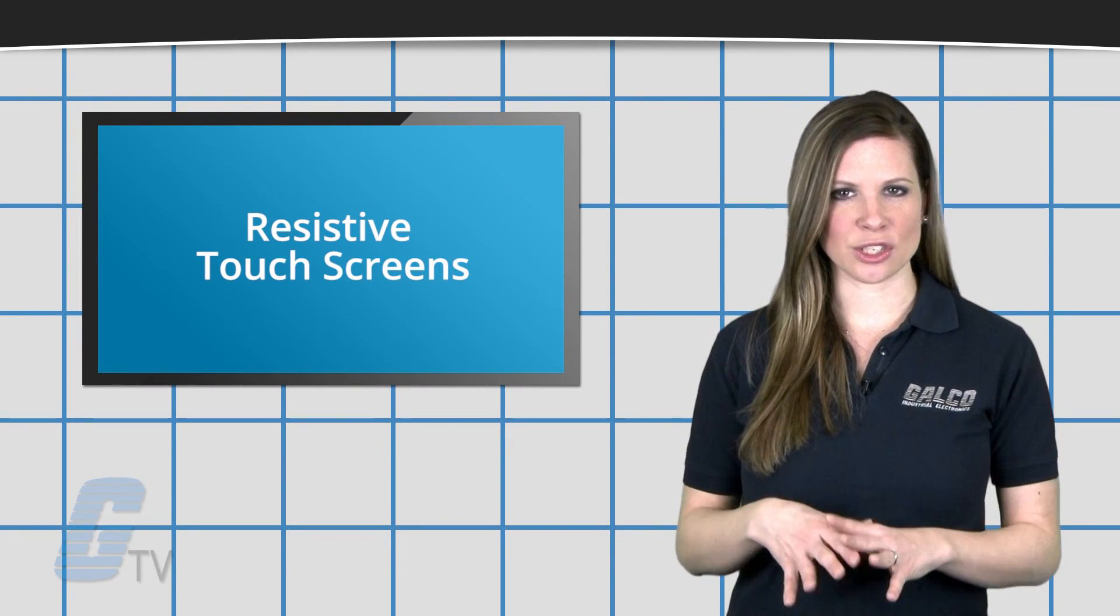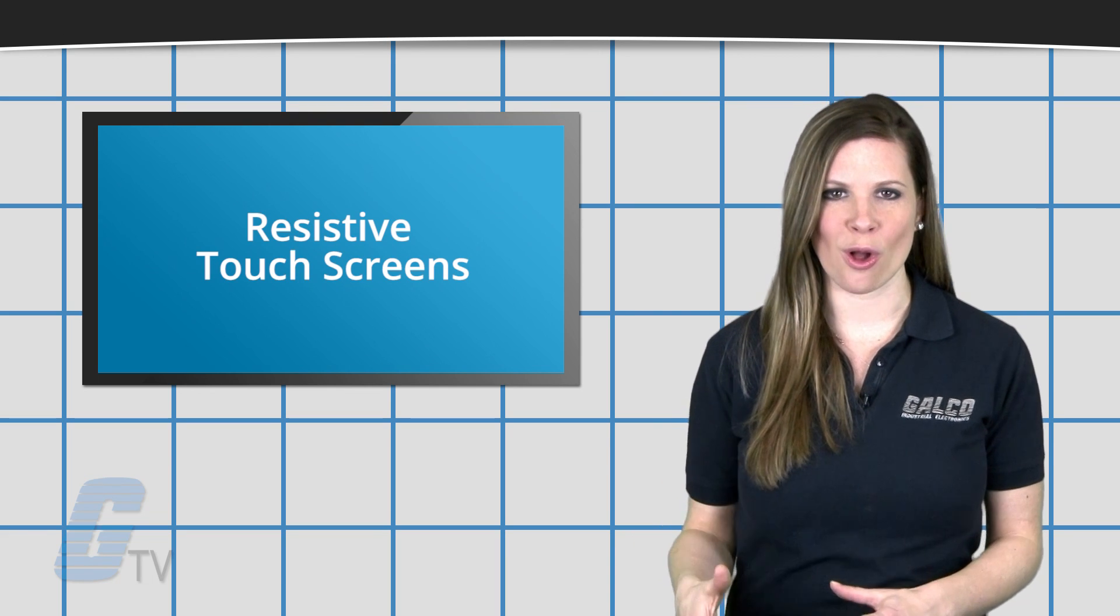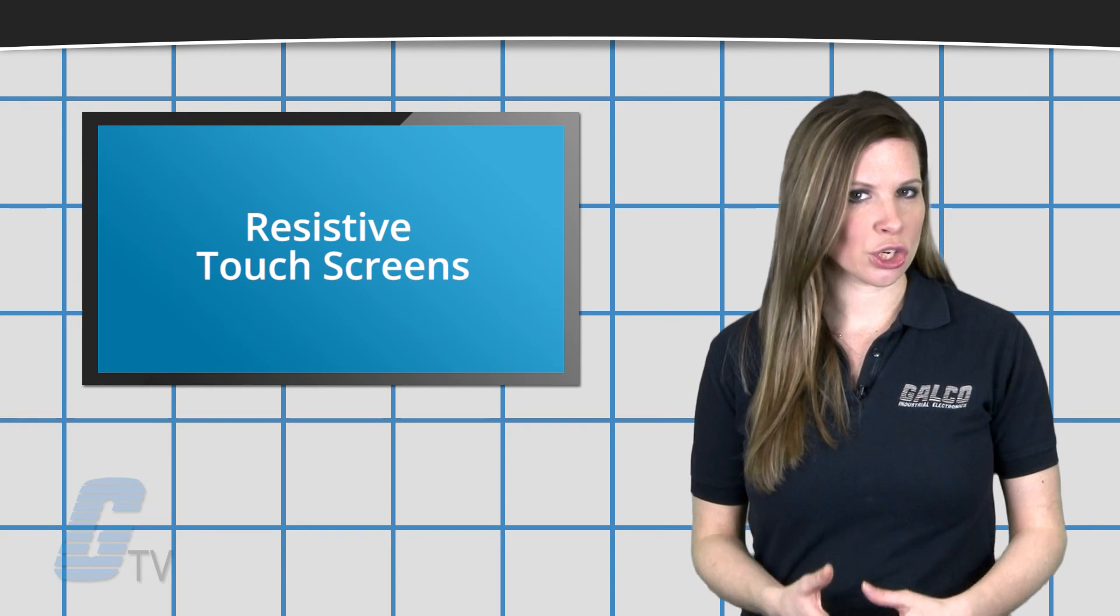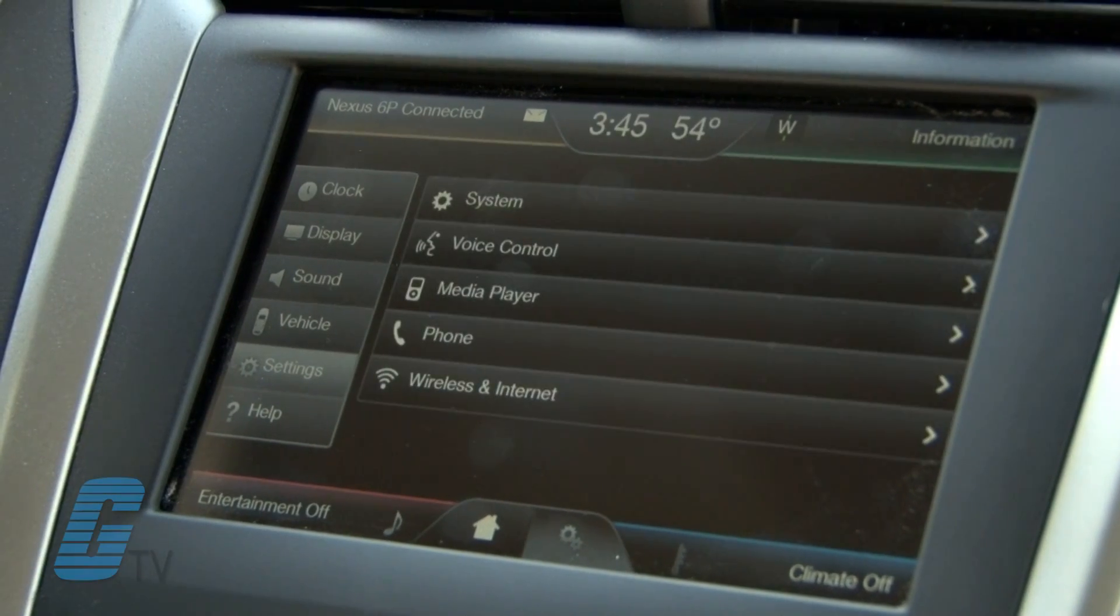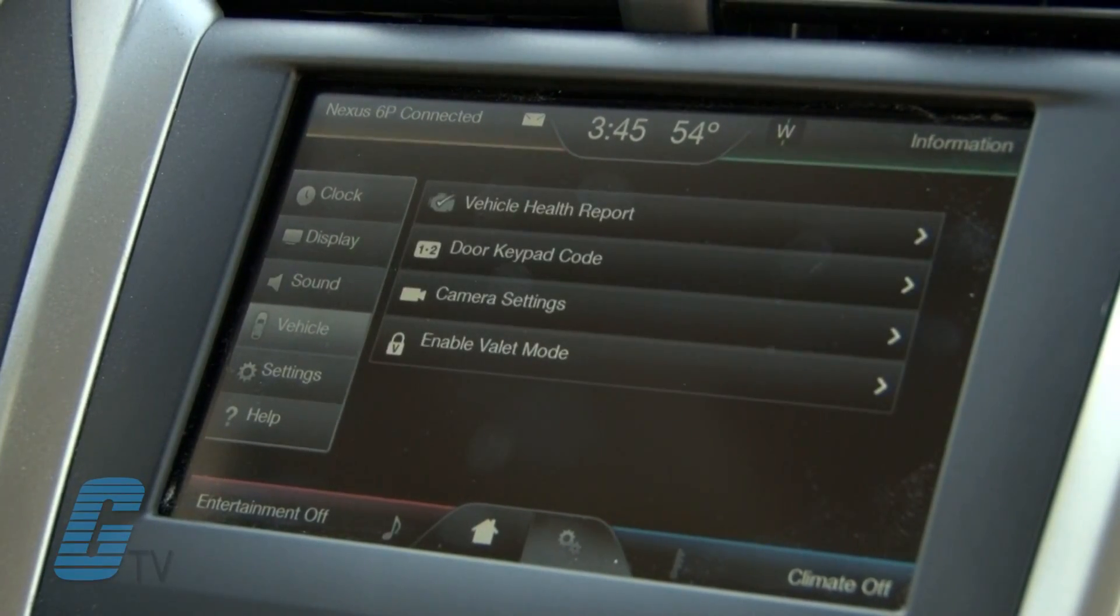you can use anything to press the screen and get a result. Software will then determine the touch locations. Resistive screens are often found in ATMs or dashboard units in cars.